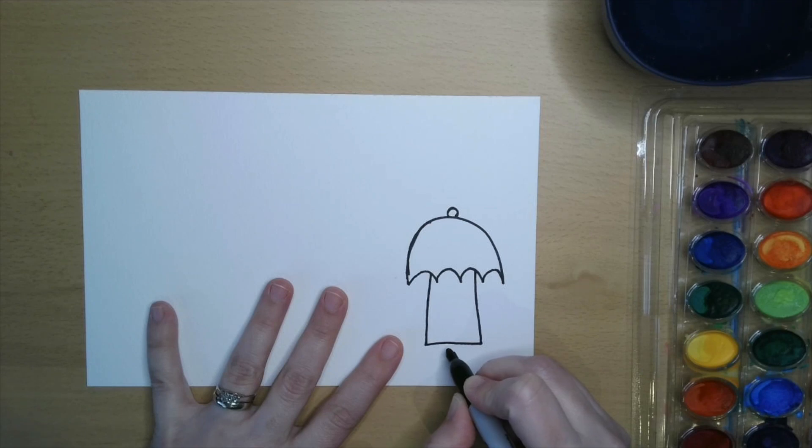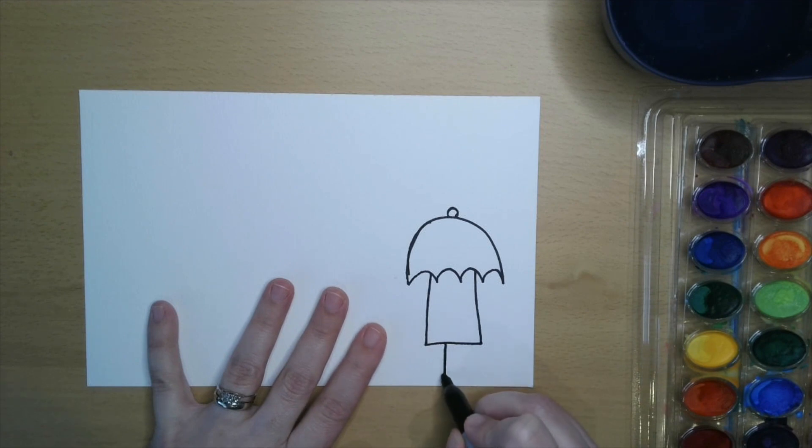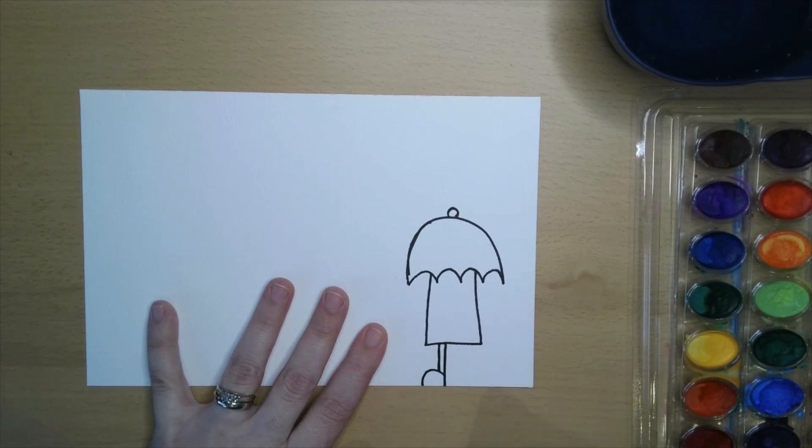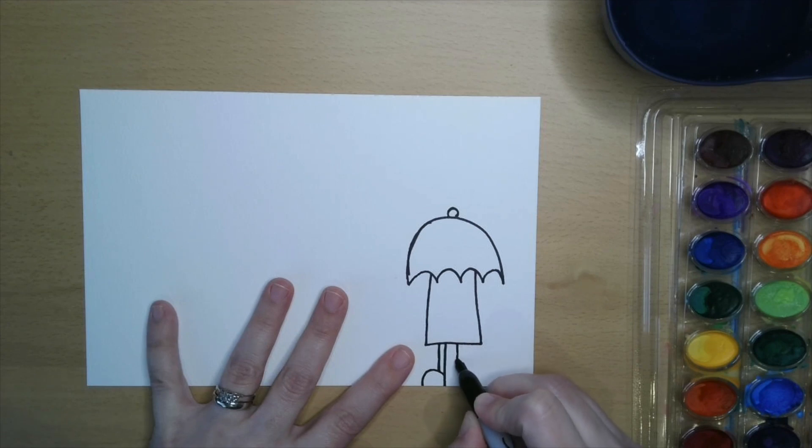Then I'm gonna give myself some rain boots. I'm gonna make a line coming down from the bottom of my coat to the bottom of my paper, then put a little bump for the bottom of my boot, and then give it another little line for the top of my boot there. Watch, I'll do that again—a line from the bottom of my coat to the bottom of my paper, make a bump, and then another line for my boot.